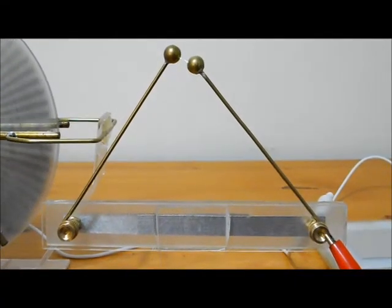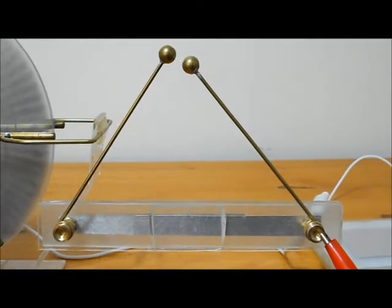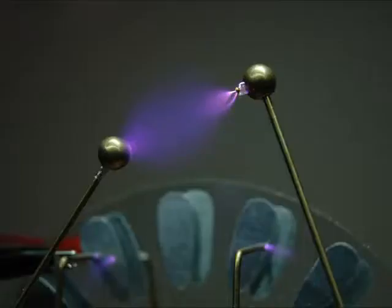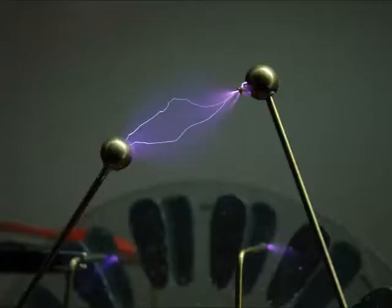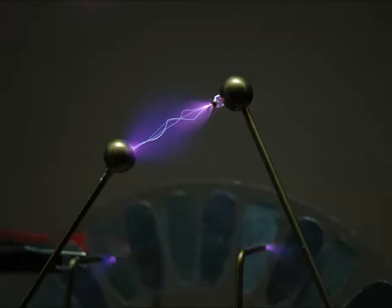Even when the gap is small, the discharge of the positive is visibly brighter and more concentrated. By adding a small breakout ball to the positive terminal, longer sparks can be obtained which again tend to branch out towards the negative.